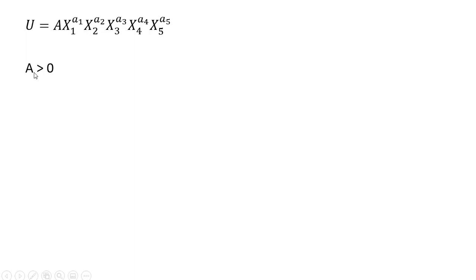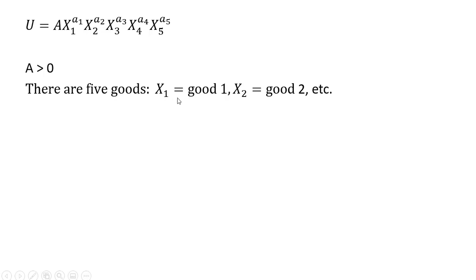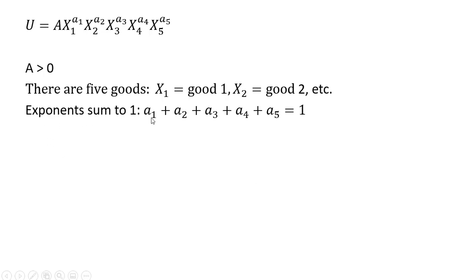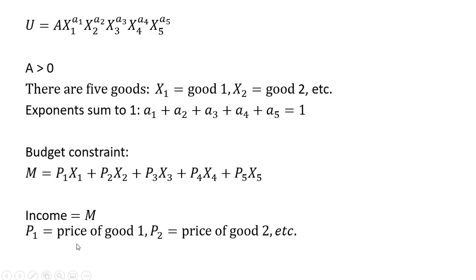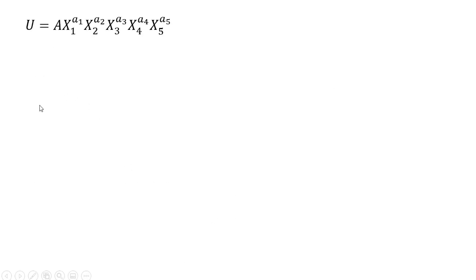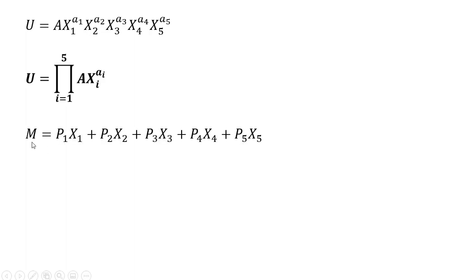Here is our utility function — a is just some constant greater than zero, and there are five goods: x subscript 1 is good one, x subscript 2 is good two, etc. The exponents sum to one: a subscript 1 plus a subscript 2 through a subscript 5 equals one. Here is our budget constraint: m is our money income, and P subscript i is the price of good i. We can rewrite the utility function using the product operator and the budget constraint using the summation operator.